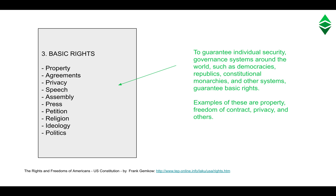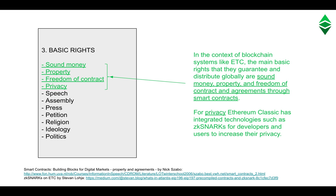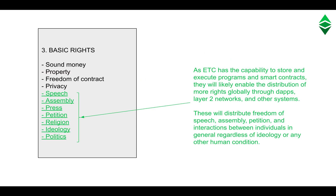Three: basic rights. To guarantee individual security, governance systems around the world — such as democracies, republics, constitutional monarchies, and other systems — guarantee basic rights. Examples of these are property, freedom of contract, privacy, and others. In the context of blockchain systems like ETC, the main basic rights they guarantee and distribute globally are sound money, property, and freedom of contract and agreements through smart contracts. For privacy, Ethereum Classic has integrated technologies such as zk-SNARKs for developers and users to increase their privacy. As ETC has the capability to store and execute programs and smart contracts, they will likely enable the distribution of more rights globally.